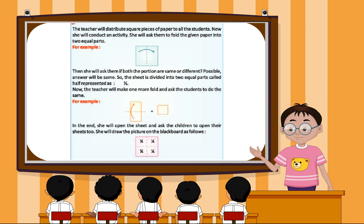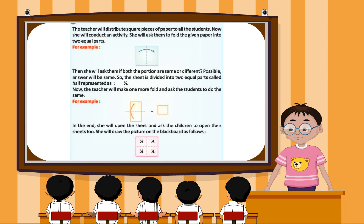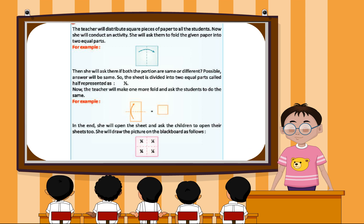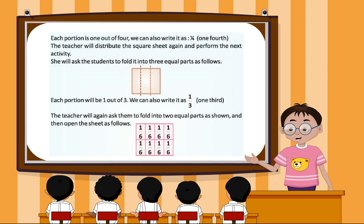Now the teacher will make one more fold and ask the students to do the same. In the end, she will open the sheet and ask the children to open their sheets too. She will draw the picture on the blackboard as follows.